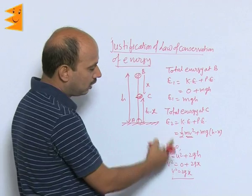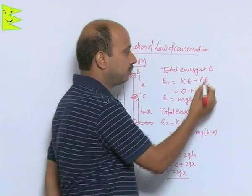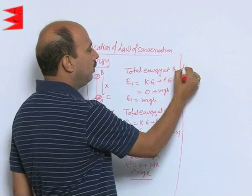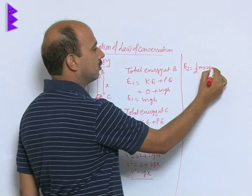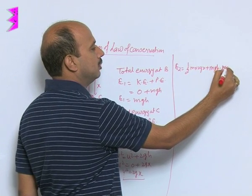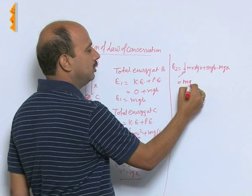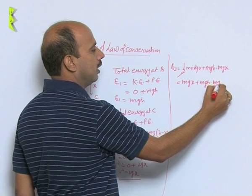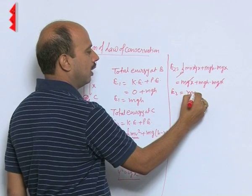We get the total energy E2. We can write E2 equals half m into 2gx plus mg(h minus x). The 2 gets cancelled. We get mgx plus mgh minus mgx. The mgx terms cancel. So E2 is also equal to mgh.